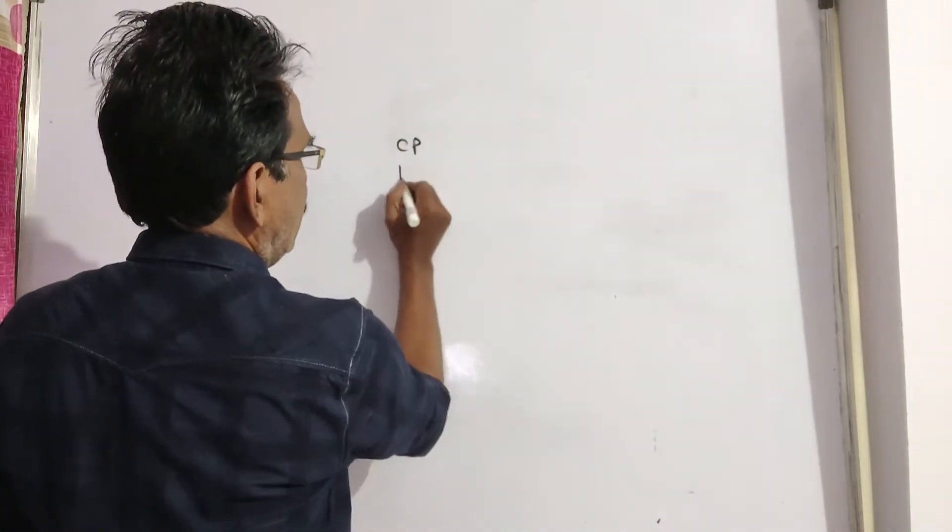See friends, a man sells an article at a profit of 25%. That means if cost price is 100,